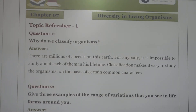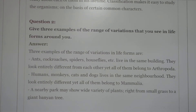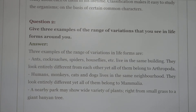Second question: give three examples of the range of variation that you see in life forms around you. Examples include: crocodile, spider, and houseflies, which all live in the same habitat but look entirely different. Humans, monkeys, cats and dogs live in the same environment yet look entirely different. A nearby park can show a wide variety of plants and animals from small birds to larger ones.